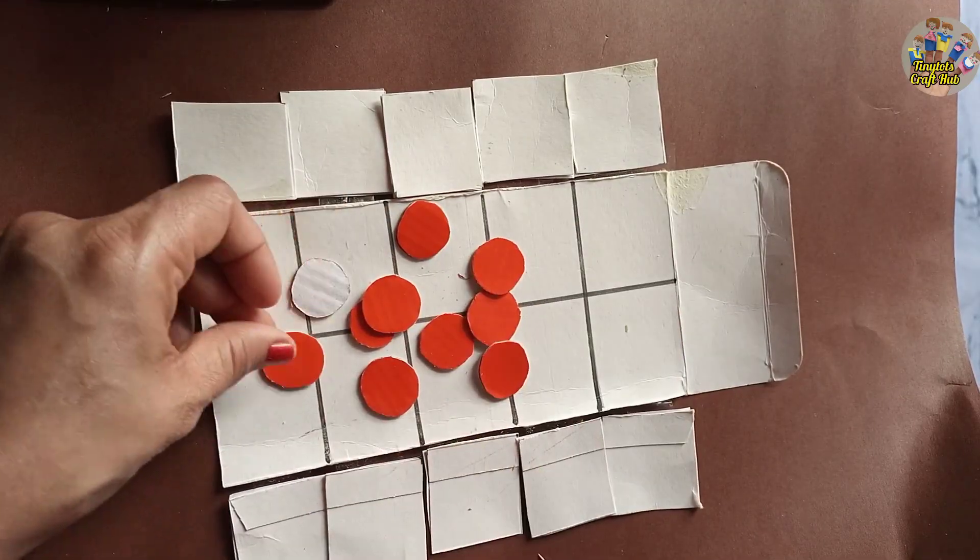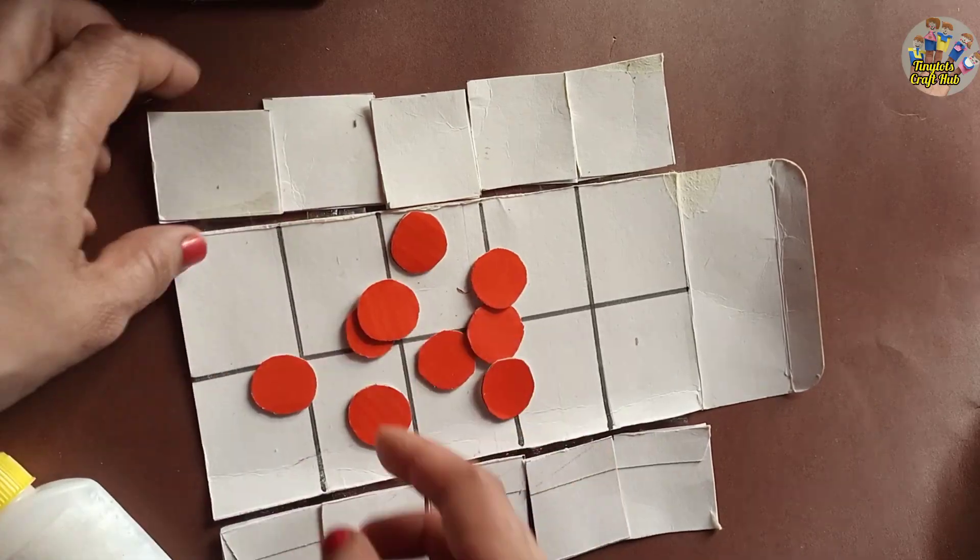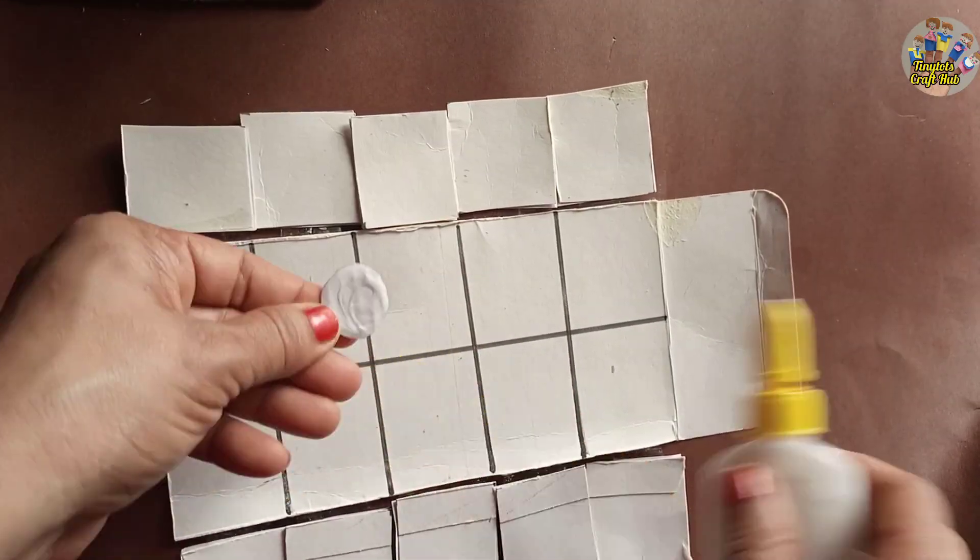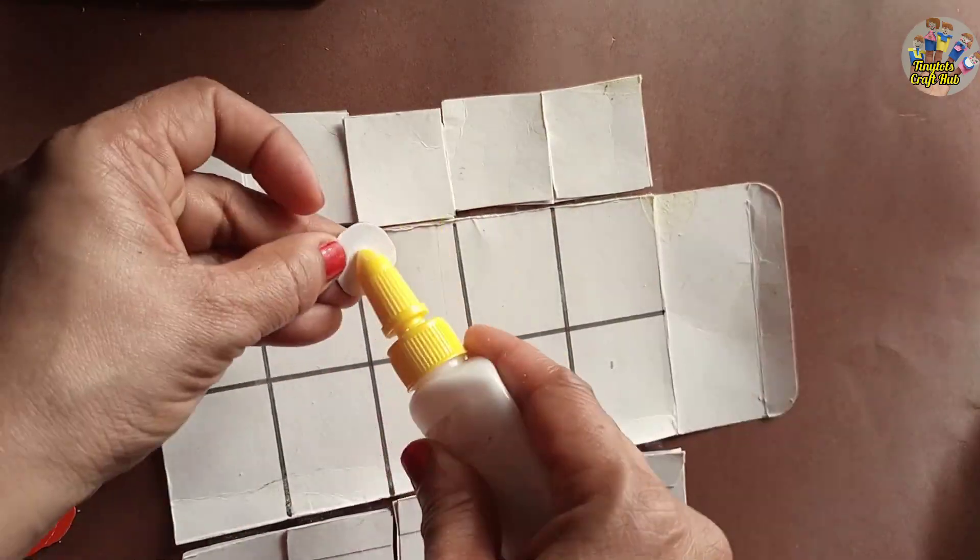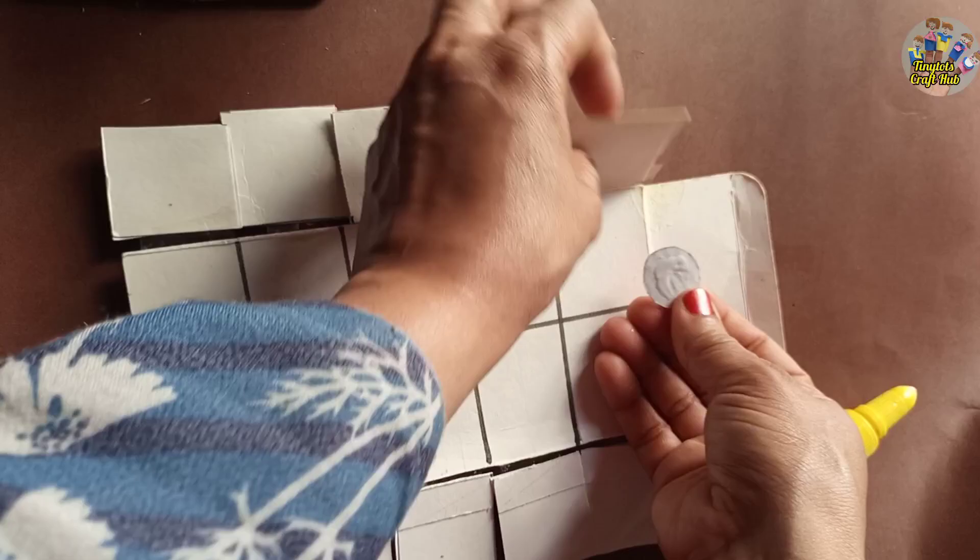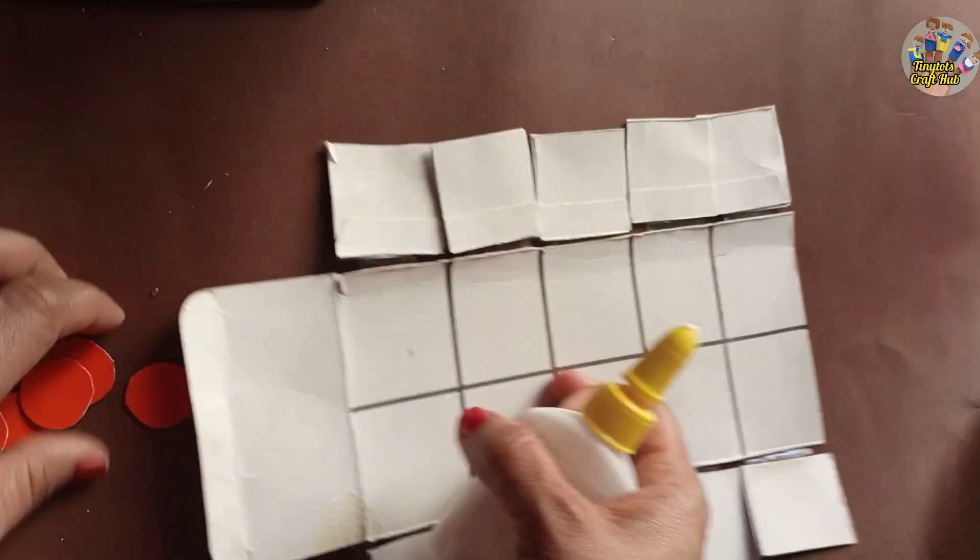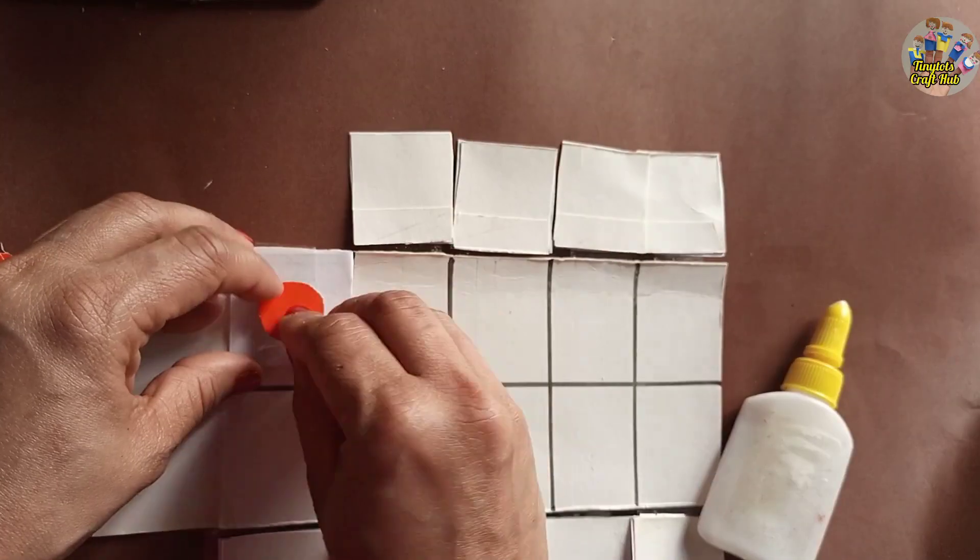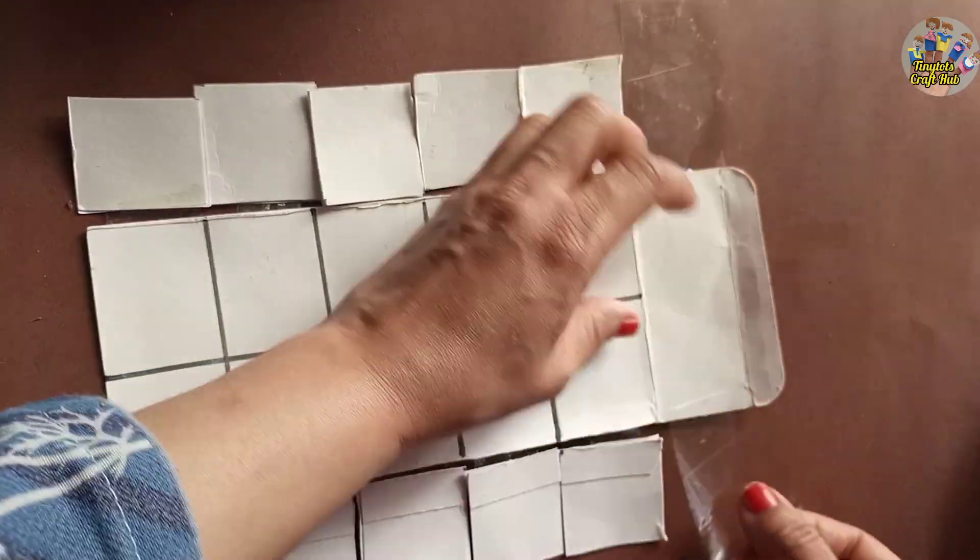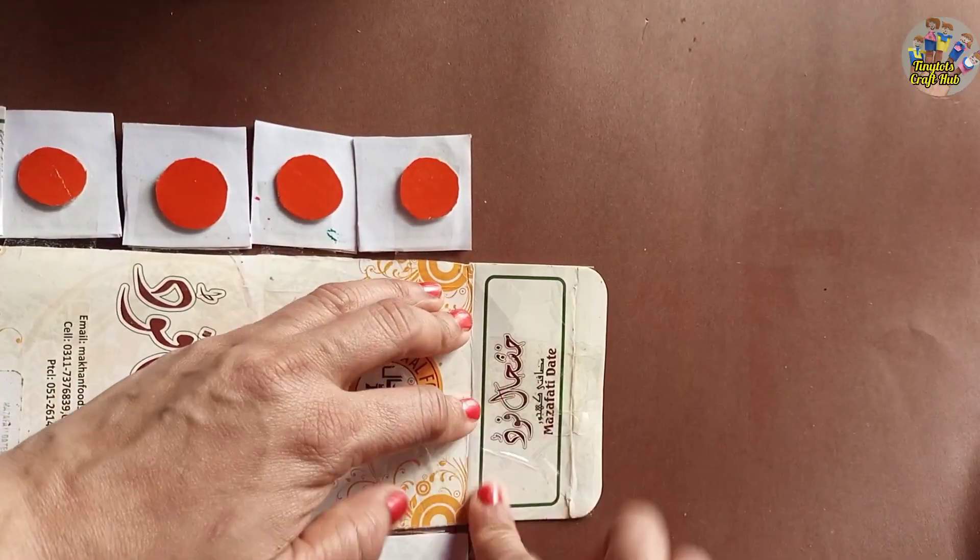These dots are important because when the child flips one piece, one dot will be there. When they flip two pieces, two dots will be there. Attach all the dots on these pieces like this and apply the remaining five dots on the other side also.